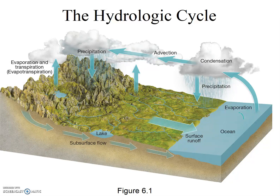In this week's assignment, you will be asked to draw a pool and process model of the hydrologic cycle. What is shown here is not a pool and process model — it's simply a diagram. A pool and process model uses boxes to represent pools where the water hangs out, and arrows to represent processes that move water from one pool to another.